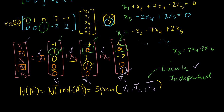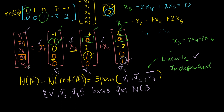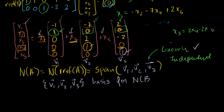So they are linearly independent. The set {v1, v2, v3} is actually a basis for the null space of B. The null space of B equals the null space of the reduced row echelon form of B, and that equals the span of these vectors. Since they're linearly independent — no way to get a 1 in each unique position from the other vectors — these guys form a basis for the null space of B.